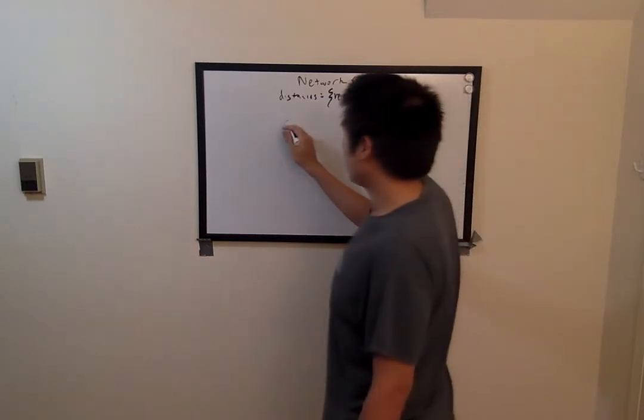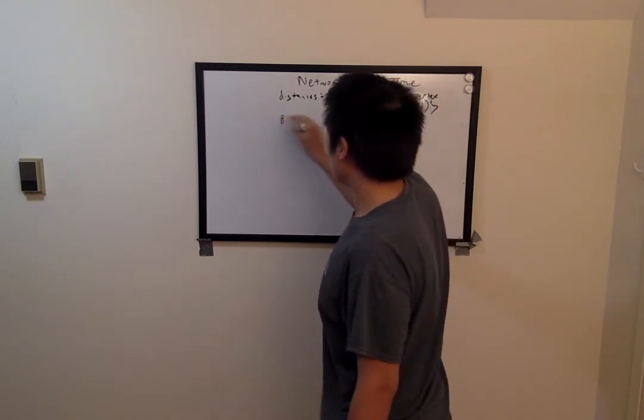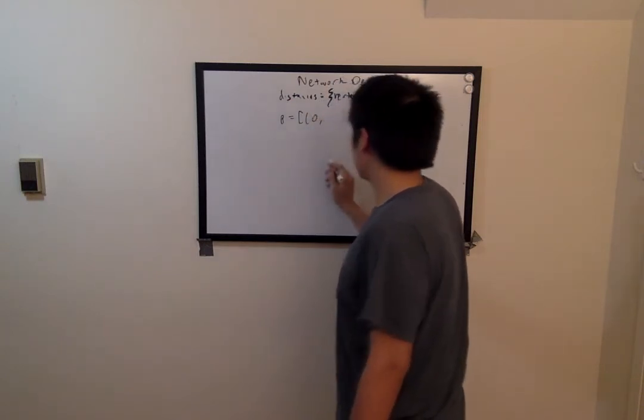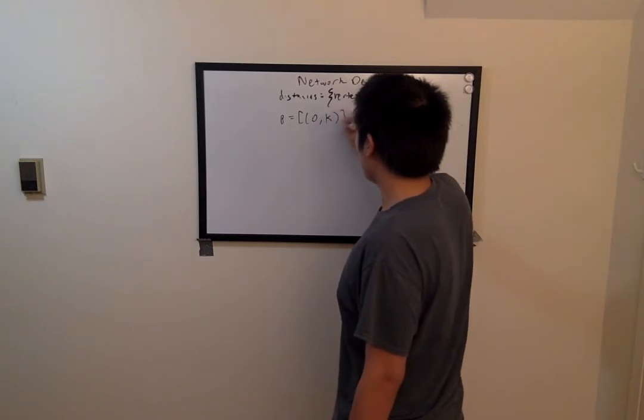We will also initialize the priority queue, which we'll call pq, and enqueue the first source vertex, which is marked as k.